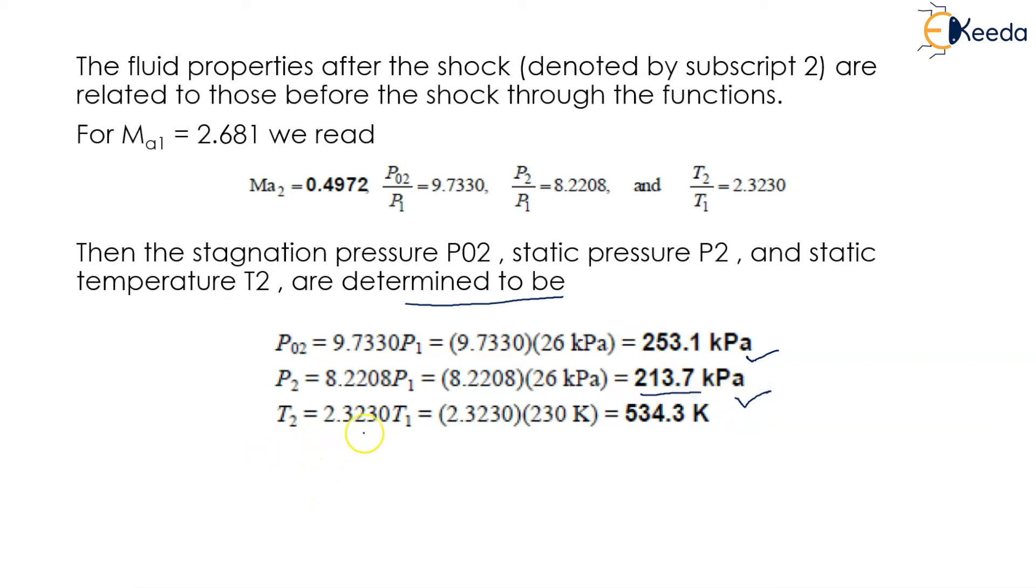T2 = 2.3230 × T1. This T1 is taken from earlier, so T2 = 2.3230 × 230K = 534.3 Kelvin.